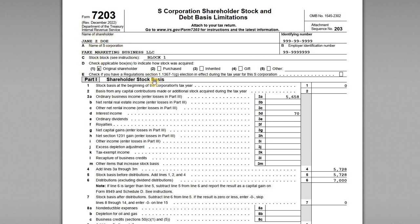For this 7203 tutorial, I want to go through a sample scenario where we have a shareholder that has a capital gain inclusion when they receive a distribution in excess of their stock basis. Our shareholder, Jane Doe, is a shareholder in an S corporation. During the 2022 tax year, she received a cash distribution just like all the other shareholders did, but the distribution exceeded her stock basis in the company, so she has to recognize some long-term capital gains.